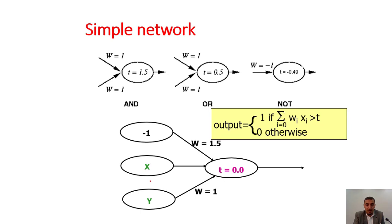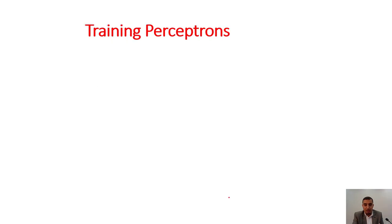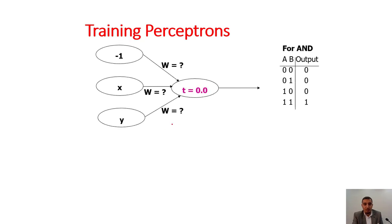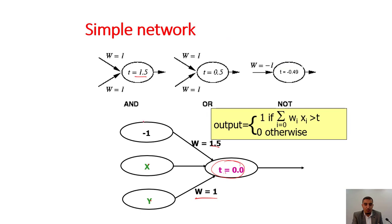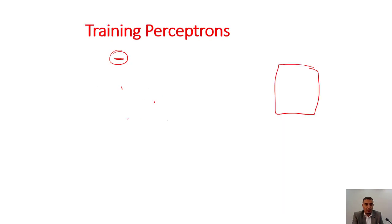For example, if we do the output here, weight equals minus 1.5, w equals 1, x and y multiplied by t which equals zero, then we get our output. For perceptron training with x, y to find the output for the AND gate, remember the biasing equals minus 1 and it is multiplied by 1.5.